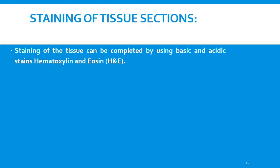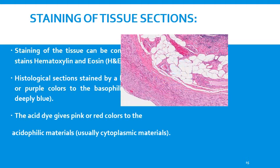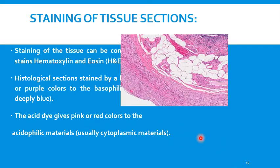The staining of tissue sections is completed using basic and acidic stains: hematoxylin and eosin. The nucleus is a basophilic material due to the presence of nucleic acids such as DNA and RNA, histone proteins, and phosphate groups; therefore the nucleus stains deeply blue with the basic dye. The cytoplasm is stained with the acidic stain eosin and gives a pink or red color.